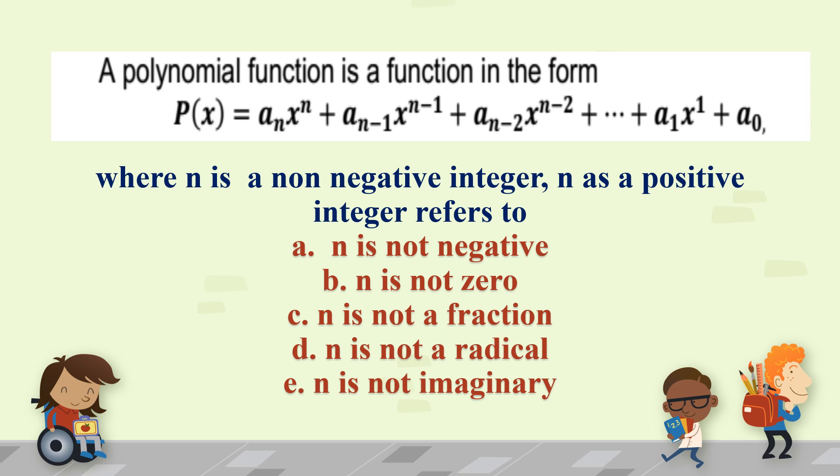C, your n is not a fraction. It means your exponent is not a fraction. Letter d, n is not a radical form. So when you say radical form, this is like having square roots or roots. Letter e, n is not imaginary. So when you say imaginary, these are numbers, negative numbers, inside the roots.